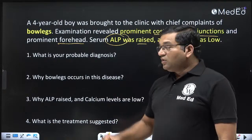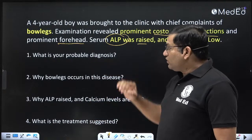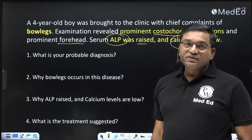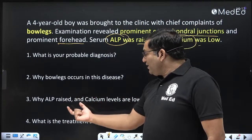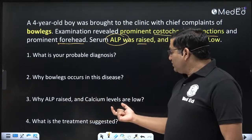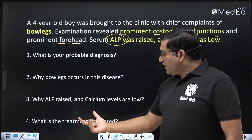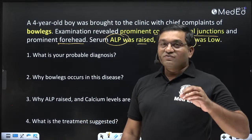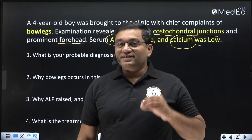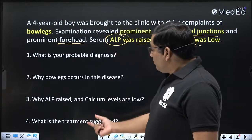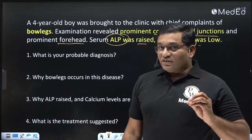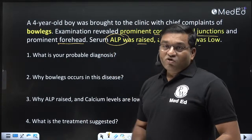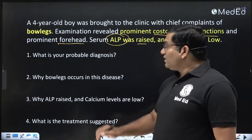The sub-questions in this topic are: What is your diagnosis? Why do bow legs occur in this disease? Why is ALP raised and calcium level low? And what is the treatment suggested? These are the sub-questions in this topic.